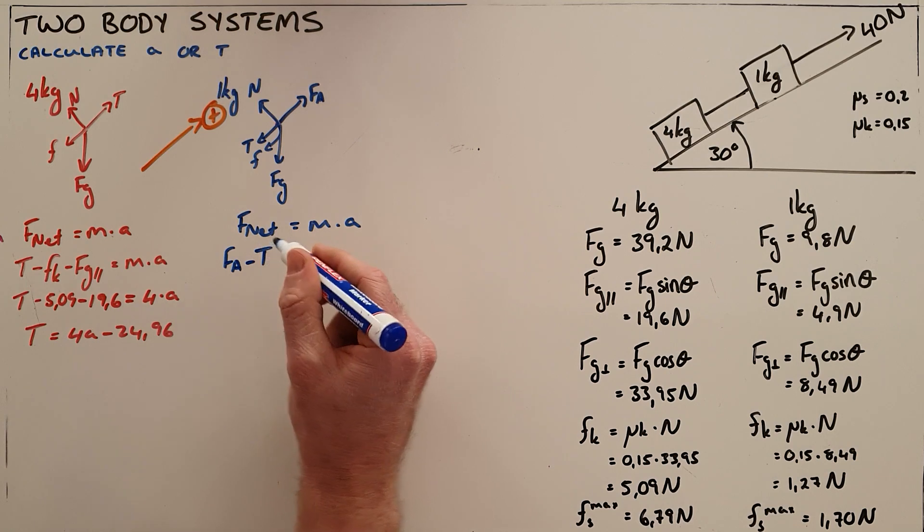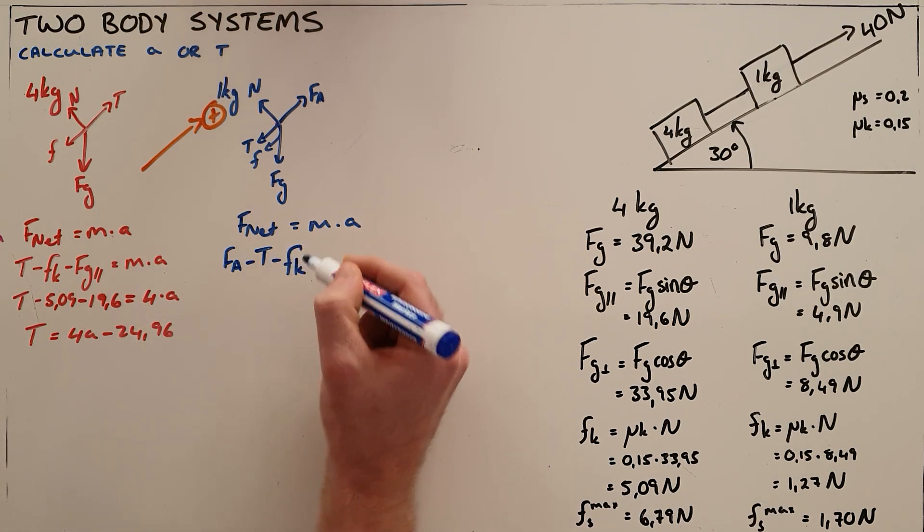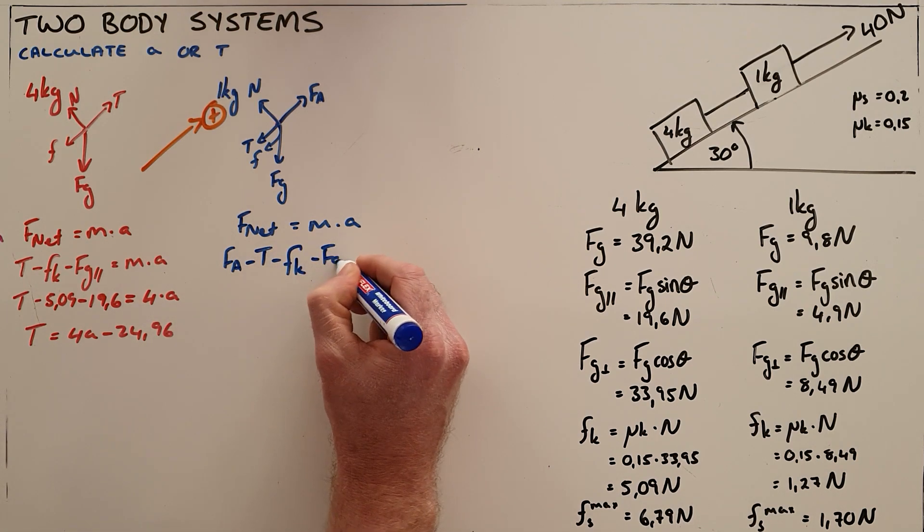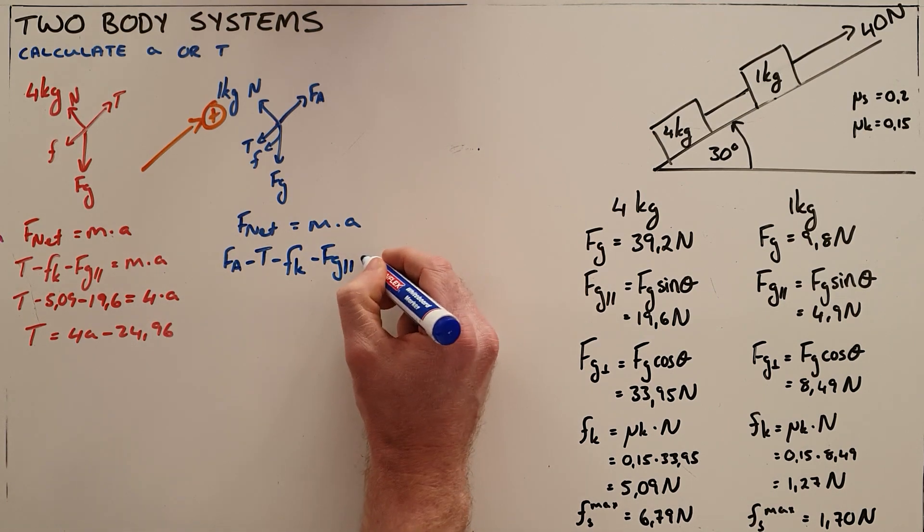There's a tension force pulling it down the slope, a kinetic frictional force and a parallel component of gravity.